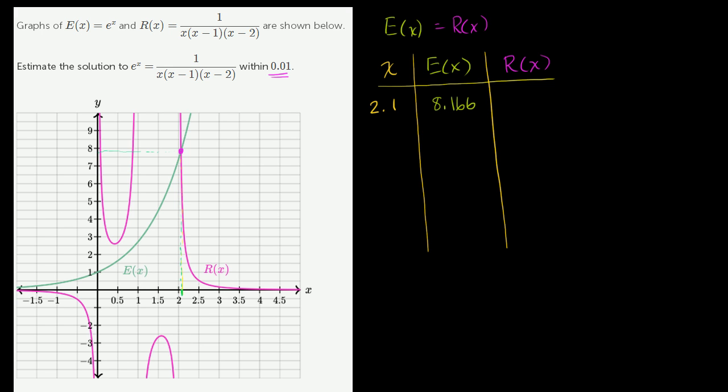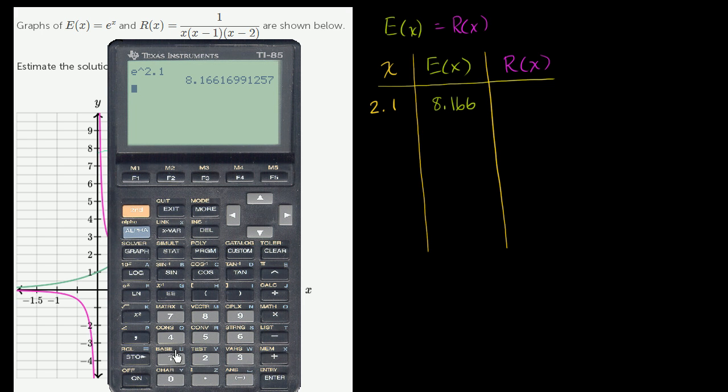And what is R(x)? R(x) is 1 divided by x, so that's going to be 2.1, times x minus 1, which is 1.1, times x minus 2, which is 0.1. And that equals 4... did I do that right? No, that can't be.